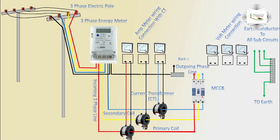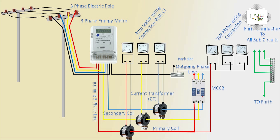Voltage meter connection. Voltage meter neutral connection is common to all voltmeters. Voltmeter one — red phase. Voltmeter two — yellow phase. Voltmeter three — blue phase connection. Three-phase red, yellow, blue phase voltmeter connections.